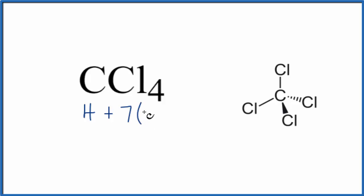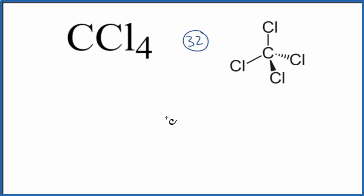If we add all of this up we have four plus twenty-eight equals thirty-two total valence electrons for the CCl4 Lewis structure. We put the least electronegative element in the center for our Lewis structure, that's the carbon, and then we're gonna put four chlorine atoms around it.